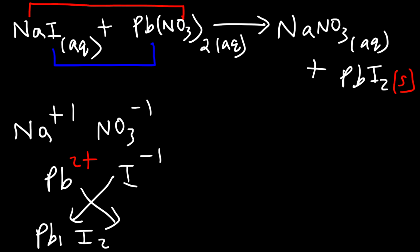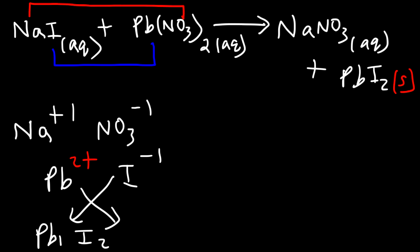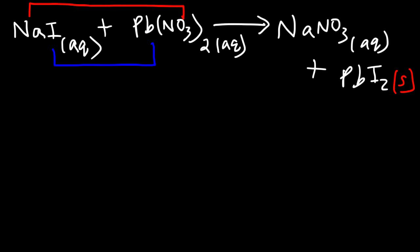This reaction has a special name. Whenever you mix two aqueous solutions and get a solid product as a result, that reaction is called a precipitation reaction. Lead iodide precipitates as a solid out of the solution. So now we have our molecular equation, but we need to balance it. On the left side we have sodium, iodide, lead, and nitrate — let's write those ions on the right side as well.